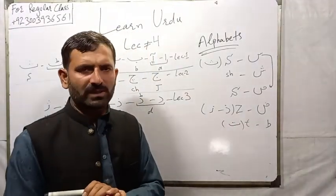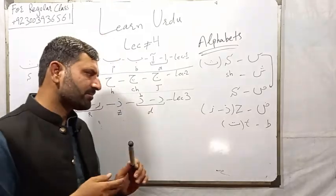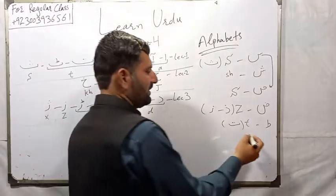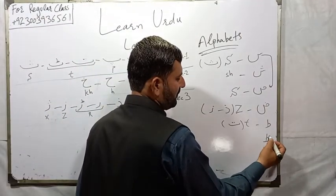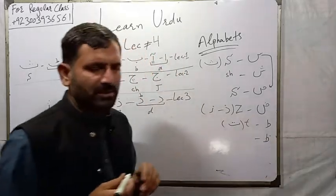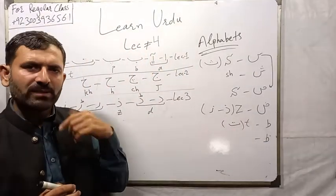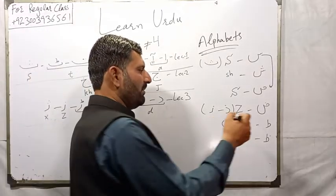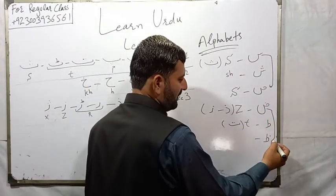Next one is Zoe. Its name in Urdu is Zoe, sound as Za, similar to this one.